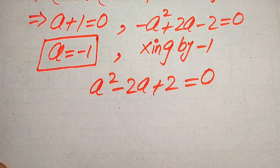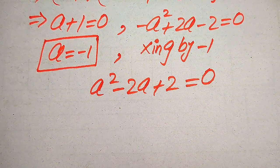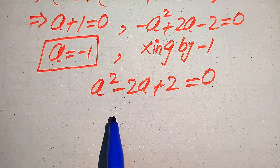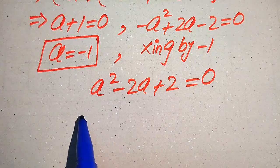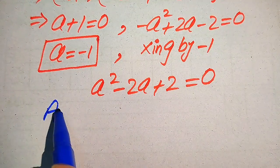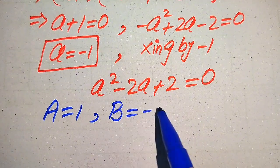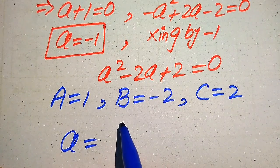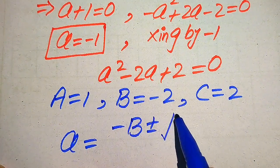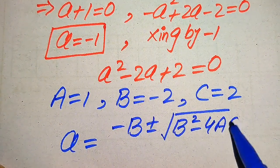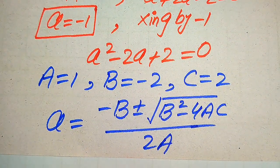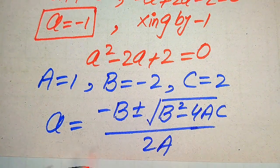We now find the roots of this quadratic equation using the quadratic formula — one of three methods alongside factorization and completing the square. The coefficients are A equals one, B equals minus two, and C equals two. The quadratic formula is a equals minus B plus or minus square root of (B squared minus 4AC), all divided by 2A.